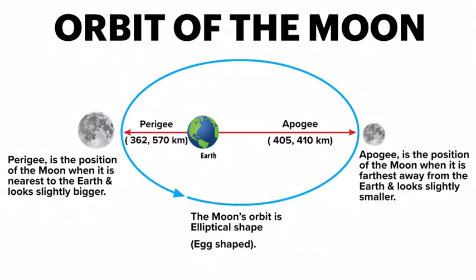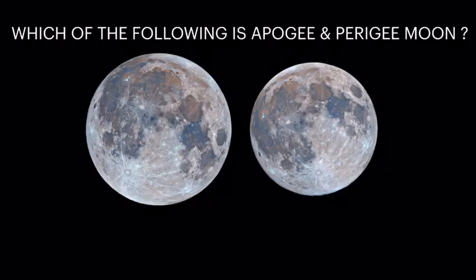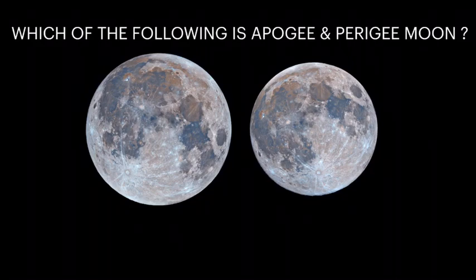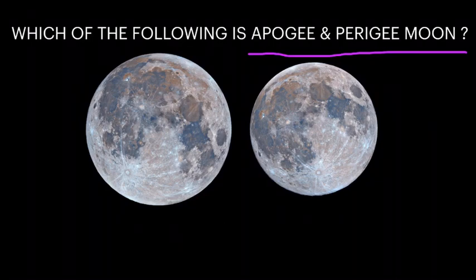Now you can pause the video and draw this in your notebook. Moving on, here is an exercise: two moons are shown, and you have to identify which moon is at apogee and which is at perigee.